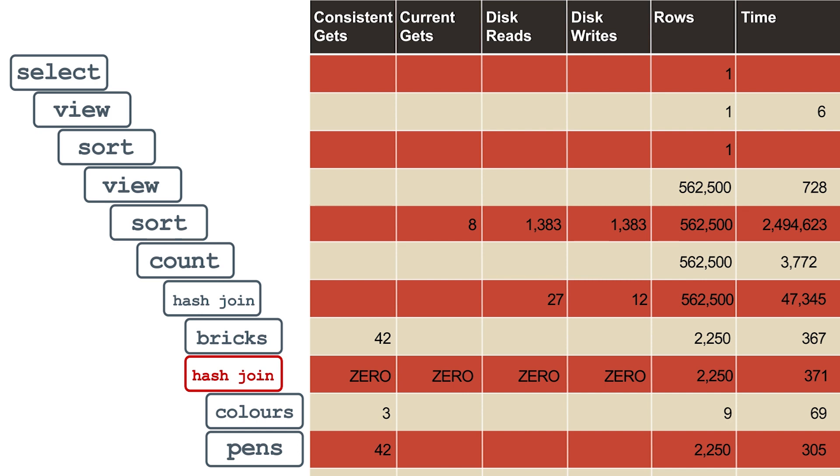If your queries are CPU-bound like this, that's generally a good thing, because you can scale your application by adding more CPUs to the database. So to make your SQL faster, you need to review the execution plan and look for the operations that did the most work — that is, process the most rows, use the most consistent gets, temp disk, or just took the longest.